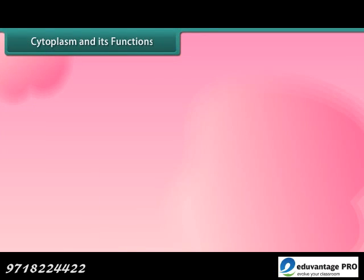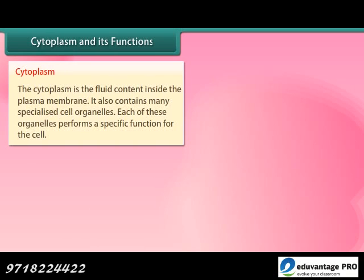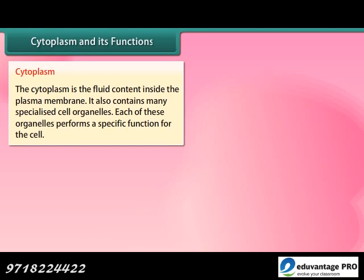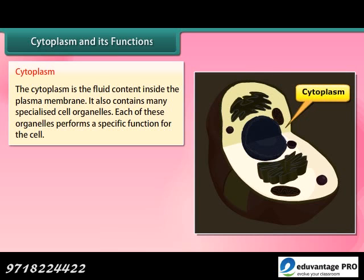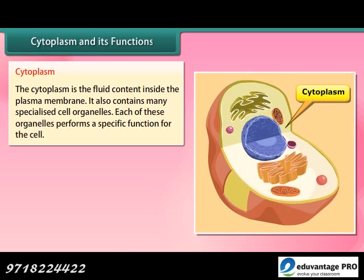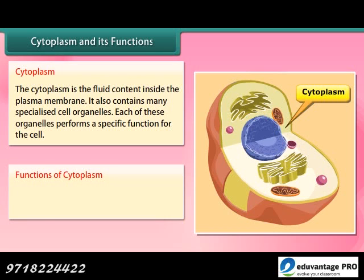Cytoplasm: The cytoplasm is the fluid content inside the plasma membrane. It also contains many specialized cell organelles, each of which performs a specific function for the cell. All cell organelles are embedded in the cytoplasm.